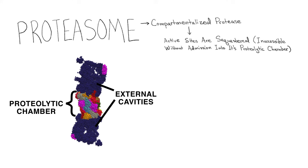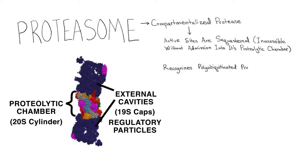The two external compartments are the 19S caps on either side, and the proteolytic chamber is inside the 20S cylinder. The 19S is called the regulatory particle since it recognizes polyubiquitinated proteins, providing selectivity for substrate degradation, and can dock at one or both ends of the 20S.